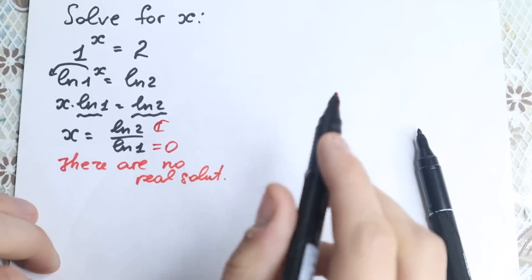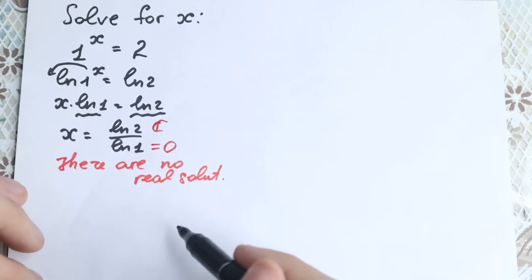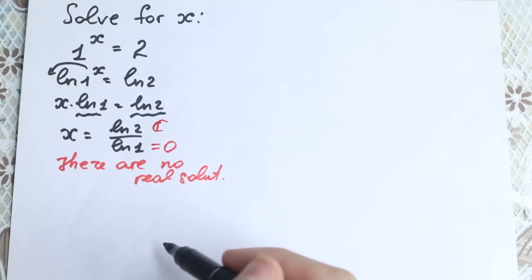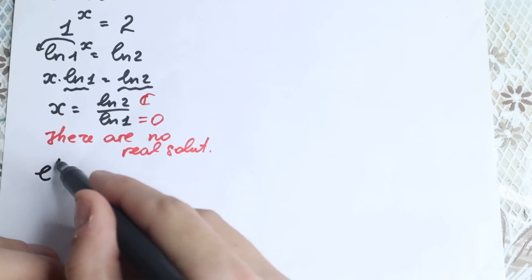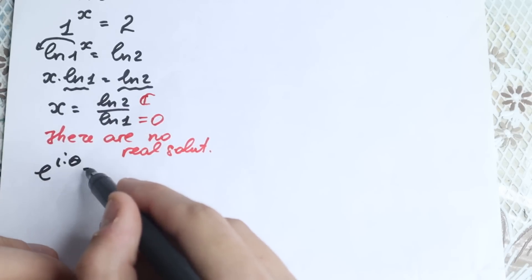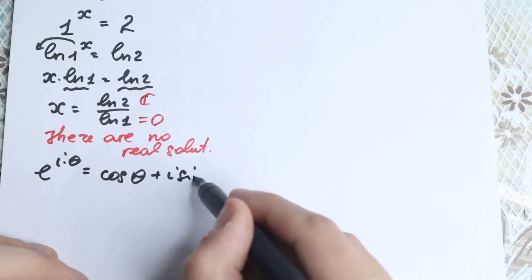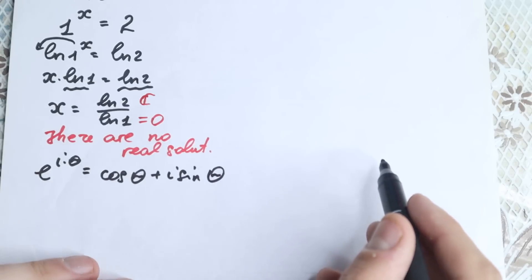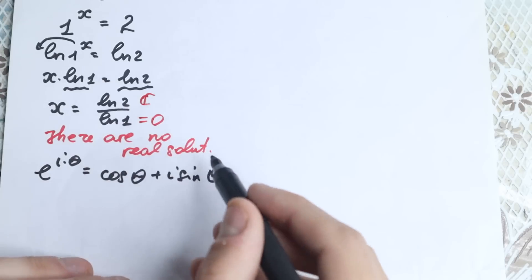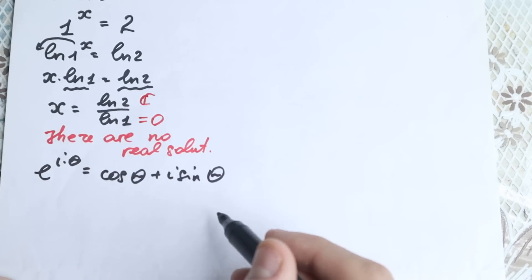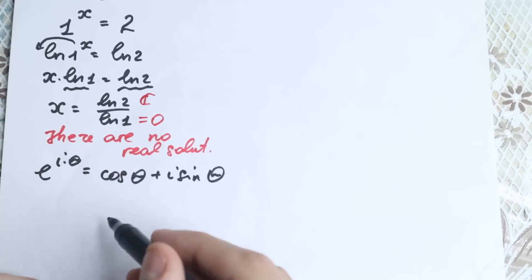We've shown there is no real solution. But how can we find complex roots? Let's start with Euler's identity: e to the power i times theta equals cosine theta plus i sine theta. Everyone should know this identity — let's try to go step by step with special cases.